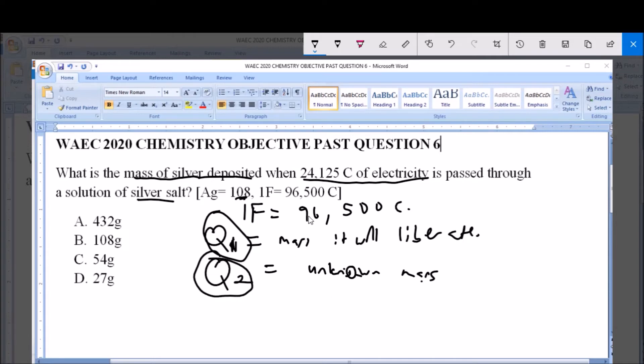To find the mass it liberates. So if you put that down, the first quantity, 96,500, the standard quantity, will liberate 108 grams. So if you put that together,